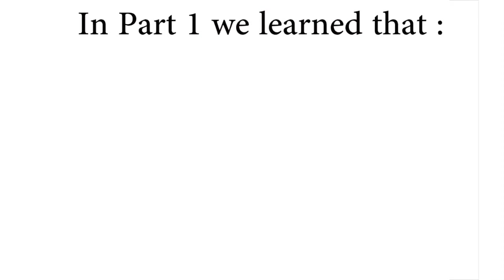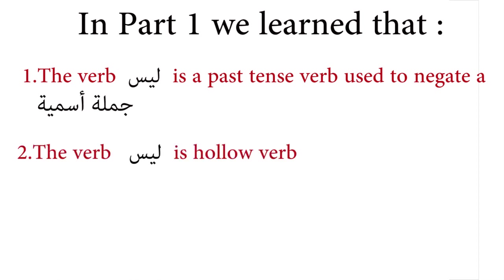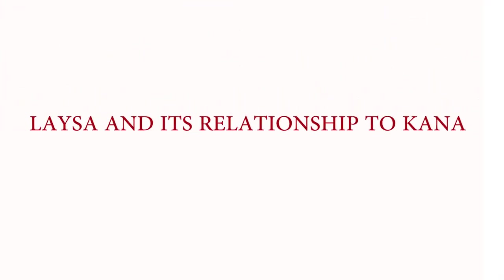In part one, we learned that the verb leysa is a past tense verb that's used to negate a jumla ismiya — a sentence that begins with a name or a noun. We also learned that leysa is a hollow verb and learned how to conjugate it. In this lesson, we're going to learn about leysa and its relationship to kana.